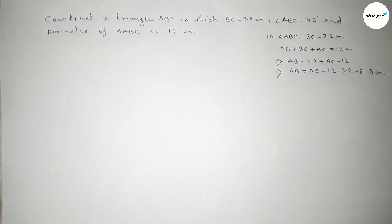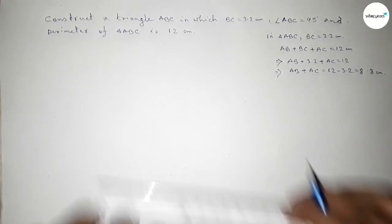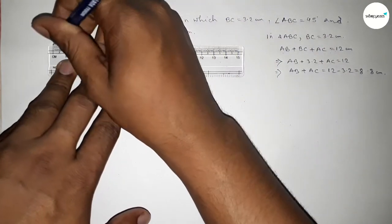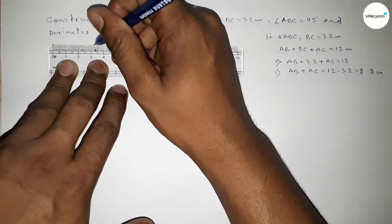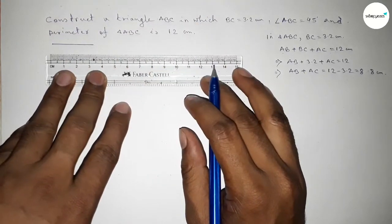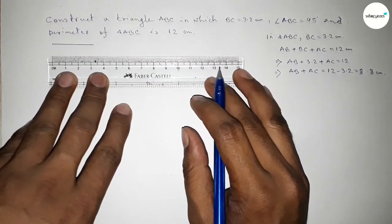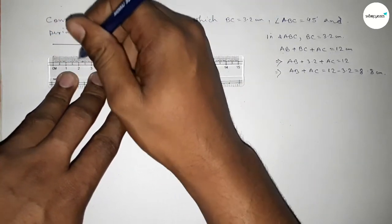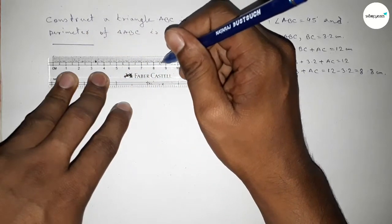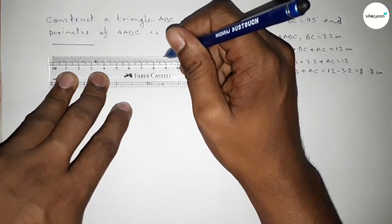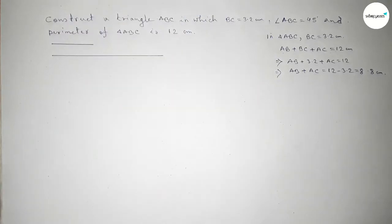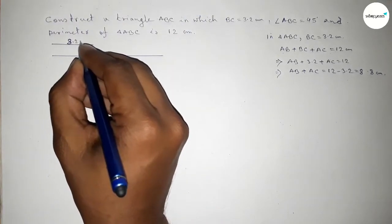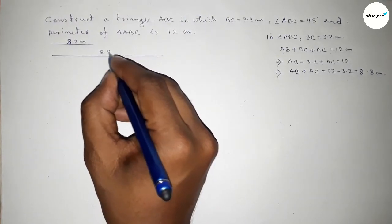First we draw a line of length 3.2 centimeters, and then another line of length 8.8 centimeters. So this one is 3.2 centimeters and this one is 8.8 centimeters.